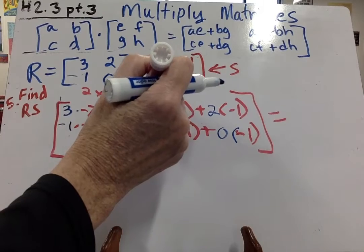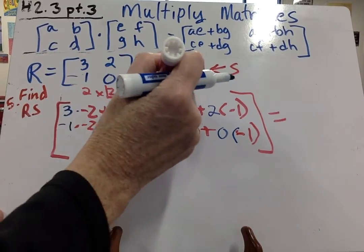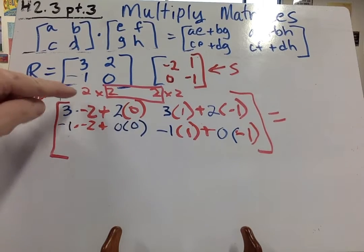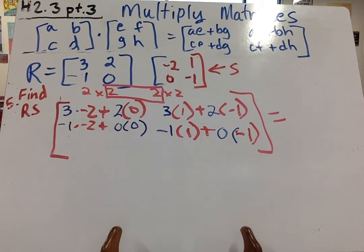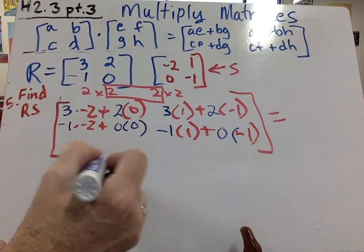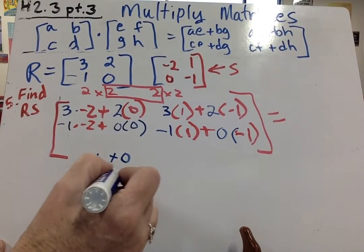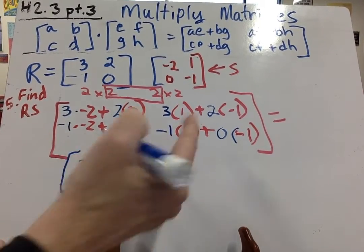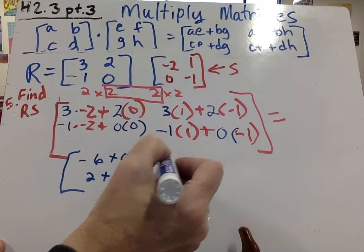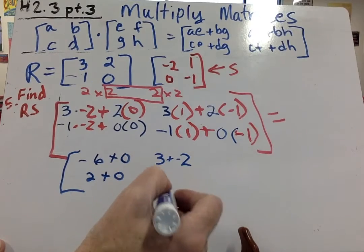So our answer should also be a 2 by 2. So we multiply this times this. Again, we have to make sure these two match up. And then our solution will be in a 2 by 2. So we've done most of this work. Now we're going to say, 3 times negative 2 is negative 6 plus 0, and this will be 2 plus 0.